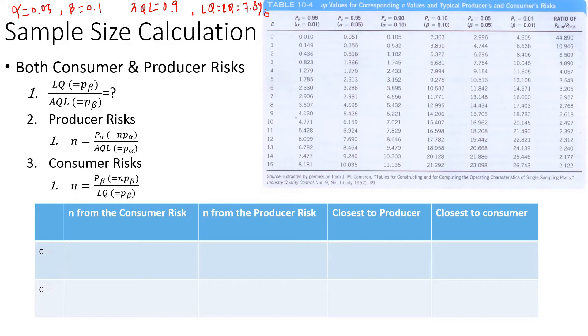To use this combined sample size calculation, first we calculate the limiting quality divided by the acceptable quality. So we have 8.7 divided by 0.9%, which equals 8.667. This is the ratio we need to calculate.